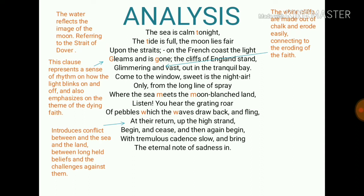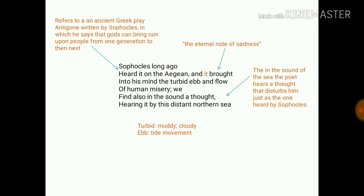The poem introduces a conflict between the sea and the land — between long-held beliefs and the challenges against them. Land represents faith and the sea represents scientific experimentation; both are in continual conflict. There is also an allusion to the ancient Greek play Antigone, written by Sophocles, in which he says that the gods can bring ruin upon people from one generation to the next — connecting to the 'eternal note of sadness.'